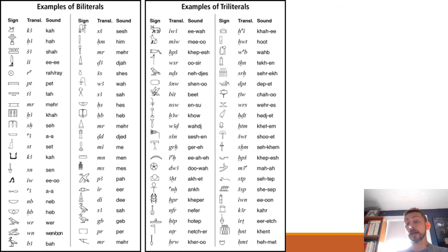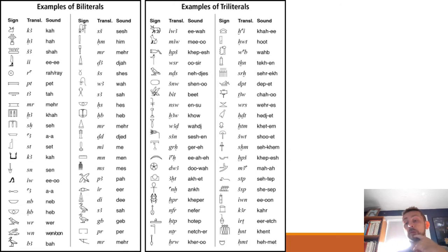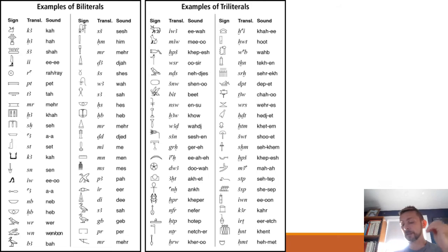It's worthwhile to memorize these if you plan on learning Egyptian, because it's just easier to have these things learned rather than constantly looking things up. And that's a good rule for all language learning — memorizing things makes them available to your working memory so you don't have to think about them while also trying to think about something else. So no shortcuts in ancient Egyptian: memory is the way to go.